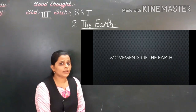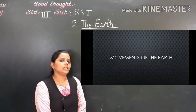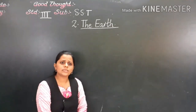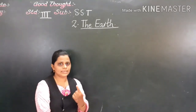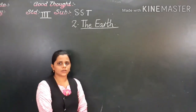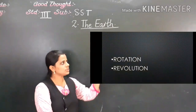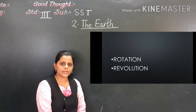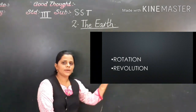So, what are we going to learn today? Movement of the earth. The earth moves in two ways: first, on its own axis, and second, on its own orbit. These two movements are known as rotation and revolution. Today we are going to discuss about rotation and revolution.